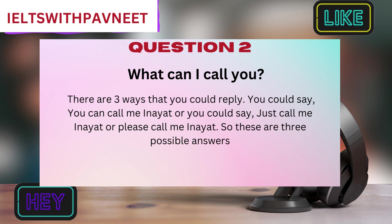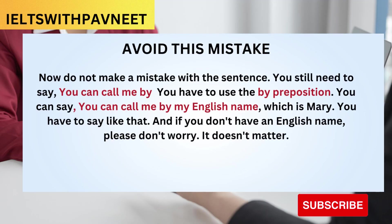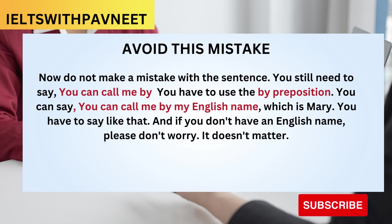For tips on question two: please don't explain why people call you by that name — this is only the greeting, so give the examiner a simple, clear answer without adding extra information. If you have an English name, you can give that to the examiner. You could say 'You can call me by my English name, Mary.' Note the structure carefully — you must use the preposition 'by': 'You can call me by my English name, which is Mary.' If you don't have an English name, please don't worry, it doesn't matter.